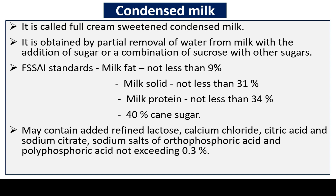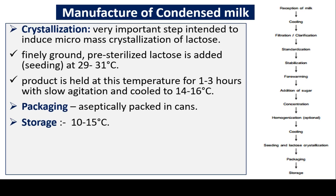Condensed milk may contain added refined lactose, calcium chloride, citric acid, sodium citrate, and sodium salts of orthophosphoric acid and polyphosphoric acid not exceeding 0.3%. Manufacture of condensed milk — crystallization is a very important step intended to induce microcrystallization of lactose. Finely ground pre-sterilized lactose is added at 29 to 31 degrees Celsius.